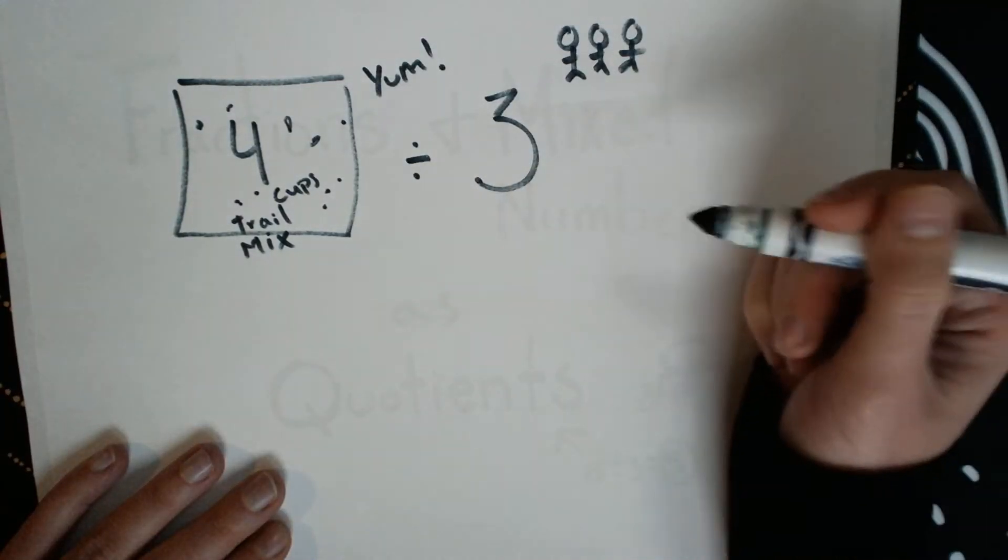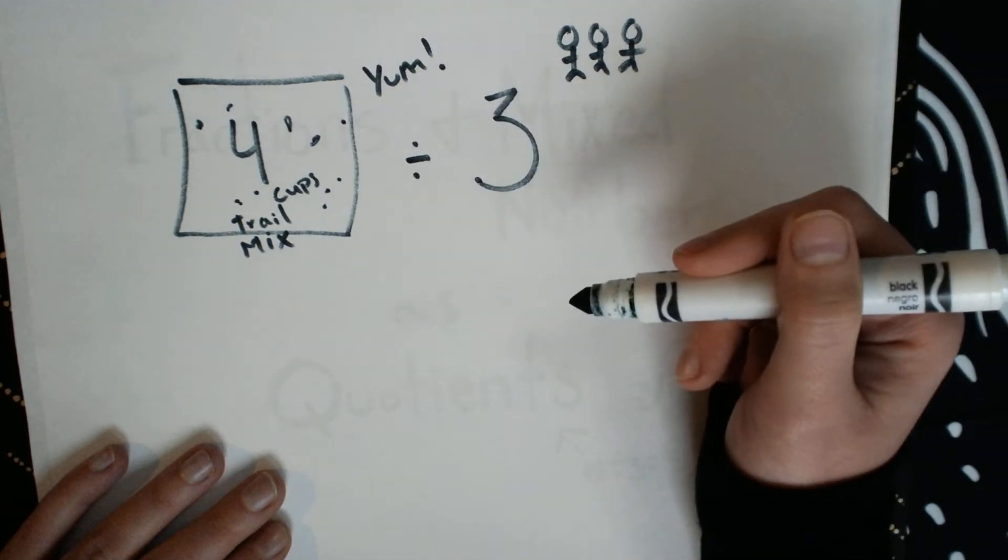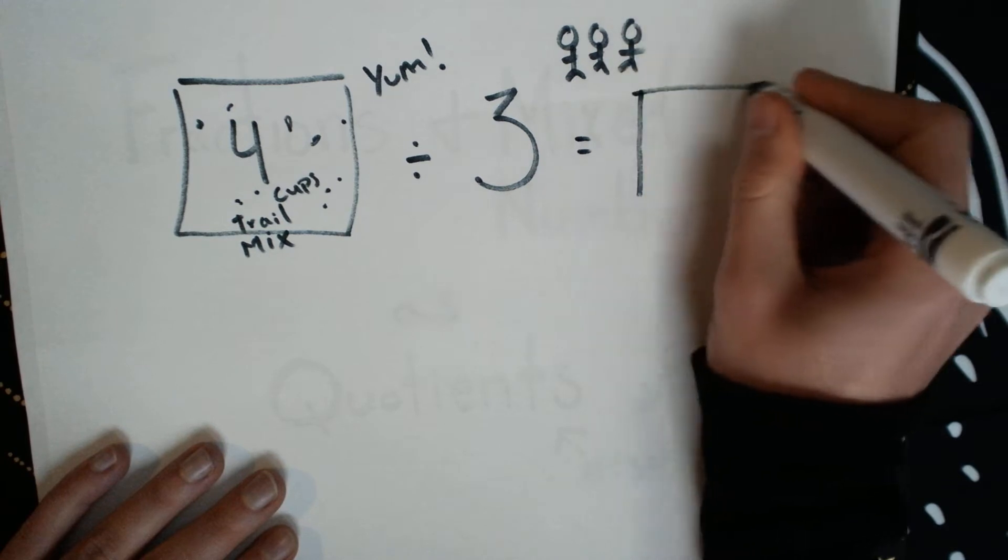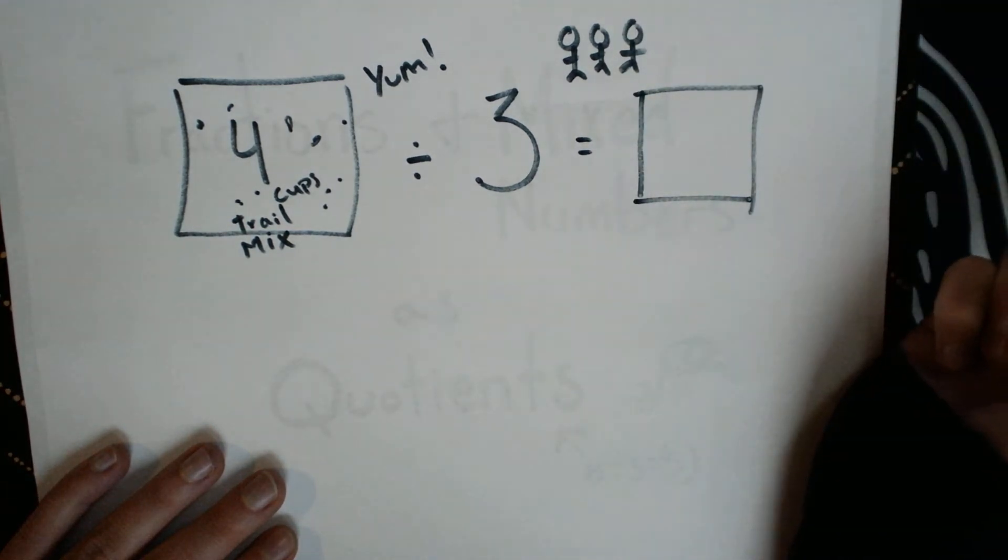We're going to talk about how we can have fractions and mixed numbers in our quotients, which means our answer in division.